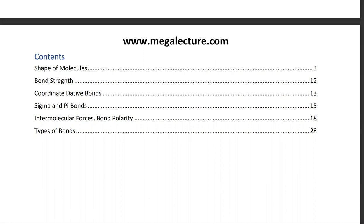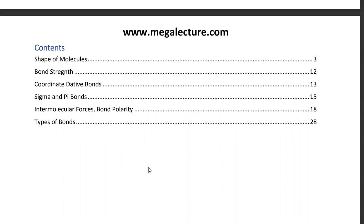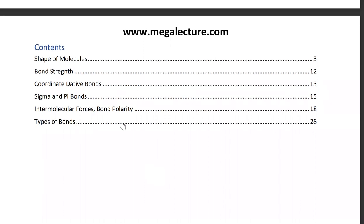We'll try and solve this chemical bonding worksheet which is based on shapes of molecules, bond strength, coordinate bonds, sigma and pi bonds, intermolecular forces, and types of bonds. We're going to go through most of the topics, starting with the first one which is shapes of molecules.